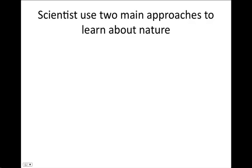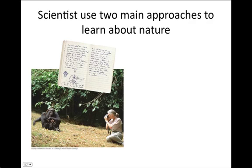Scientists use two main approaches to learn about nature. Verifiable observations and measurements are the data of discovery science. Discovery science describes life at its many levels, from the biosphere down to the cells and molecules. Discovery science can lead to important conclusions based on a type of logic called inductive reasoning, which derives general principles from a large number of specific observations.